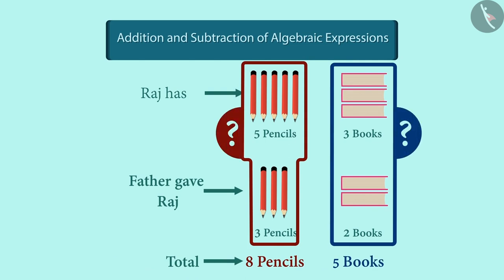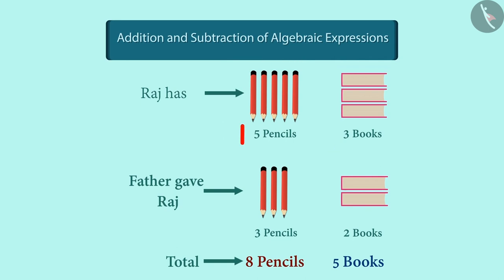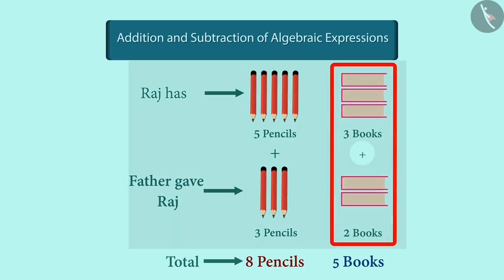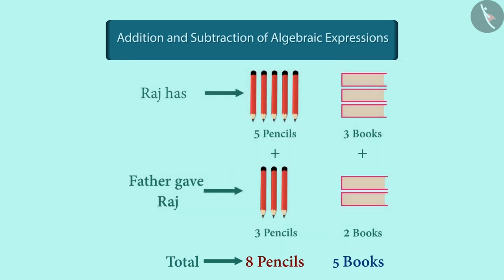Raj will now have eight pencils and five books. How did we reach this conclusion? We added the pencils gifted by his father to the pencils he already had. Similarly, we added the books gifted by his father to the books he already had. So we can see that we have added the existing pencils to the new ones and also the existing books to the new books.